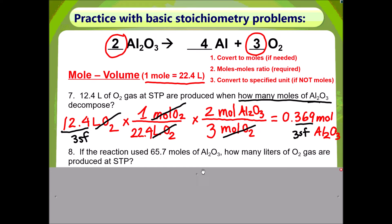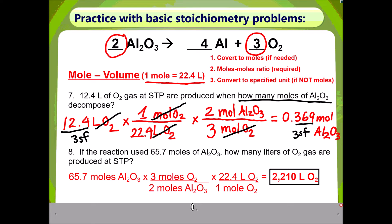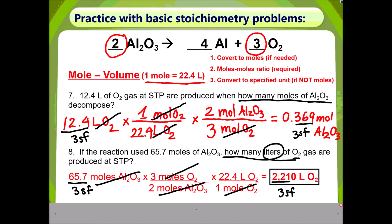Now pause the video and try problem 8. Your given is 65.7 moles of aluminum oxide. We already have moles, therefore we don't need Step 1. Moving on to Step 2, we're going to get rid of moles of aluminum oxide by placing it on the bottom so it cancels out. The question wants us to go to oxygen gas — it asks for how many liters of O₂ gas. Therefore we need to get rid of moles of oxygen and place liters of oxygen on top as a unit. The final answer is 2,010 liters of oxygen gas.